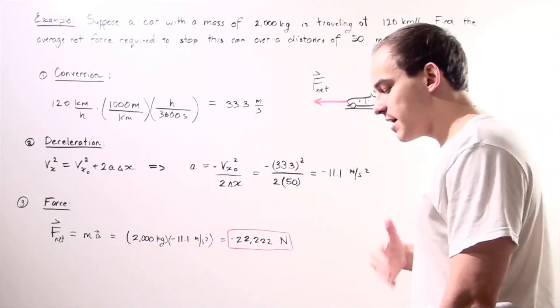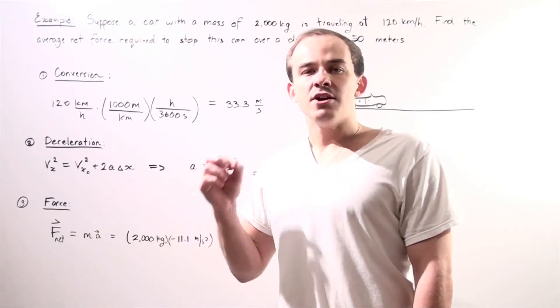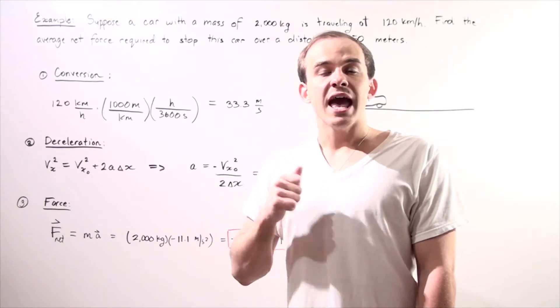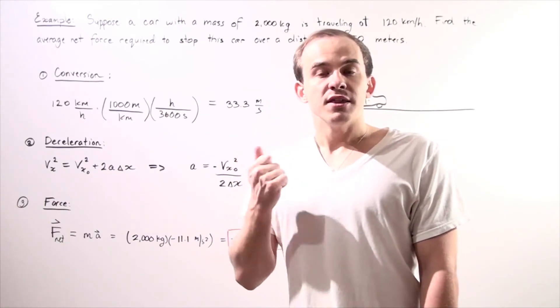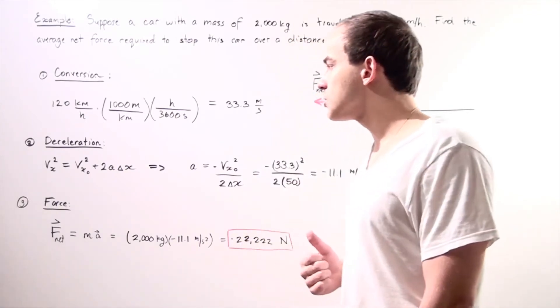Now, in our second step, we want to find what our deceleration is. In other words, in order to find the force, we must know the mass and our acceleration. That's the second law of motion. So before we find net force or the average net force, we have to use one of the kinematics equations to find our acceleration.